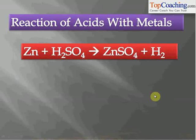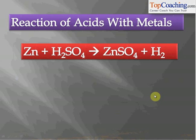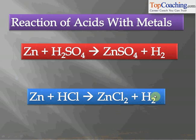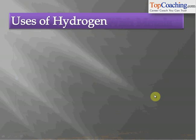Acids can also react with metals to produce hydrogen gas. The most popular laboratory method is to react zinc with sulfuric acid, forming zinc sulfate and hydrogen gas. Zinc with hydrochloric acid also evolves hydrogen gas.